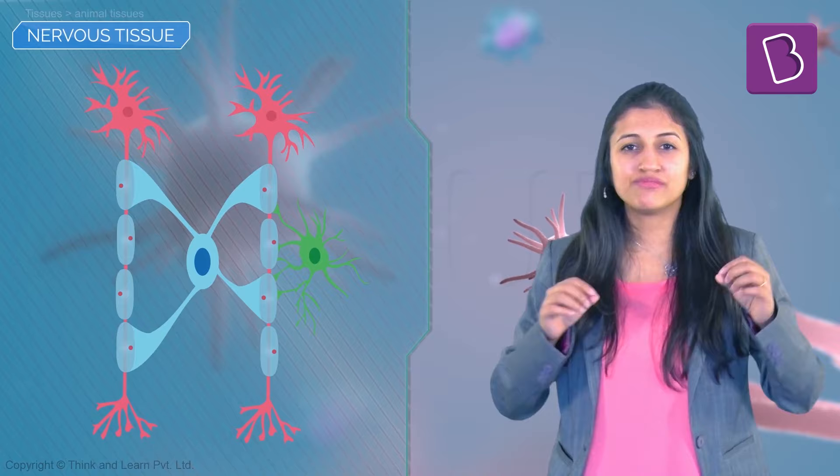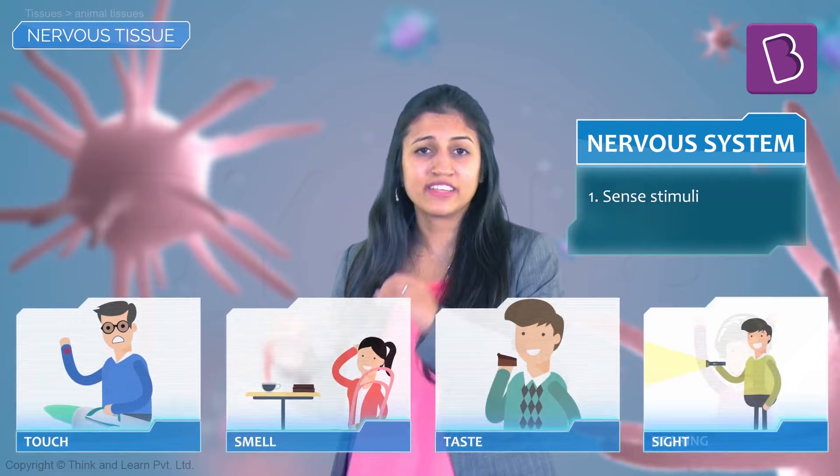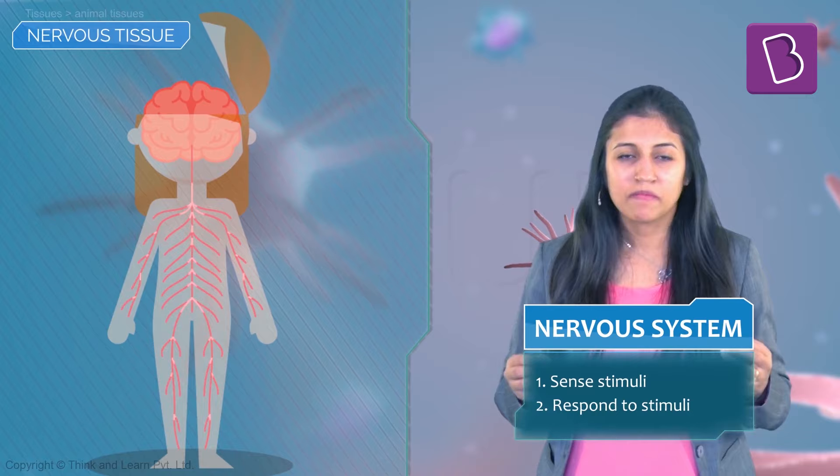And you are right — the nervous tissue is comprised of very special cells called neurons and glial cells. The work of the nervous system is to: one, send stimuli like touch, smell, taste, sight, and hearing; and two, send impulses across the body through electrical signals.